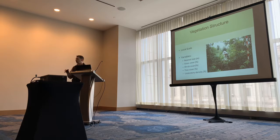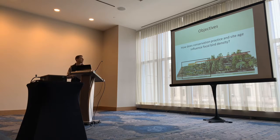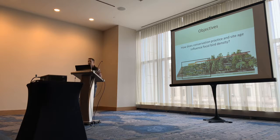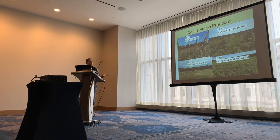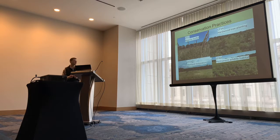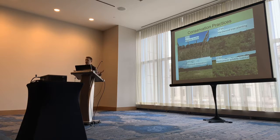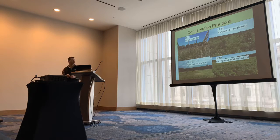Cover categories were measured within 5 meters of the sample sites. The other objective was how conservation practice and site age influence focal bird density. The focal birds were some declining birds in Illinois. The conservation practices specifically examined were CP22 riparian buffer, CP3A hardwood tree plantings, CP4D permanent wildlife habitat, and CP23 wetland restoration — the most abundant conservation practices in the CREP program in Illinois.